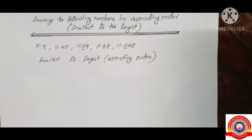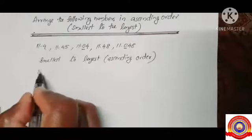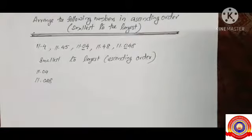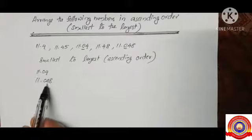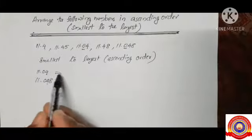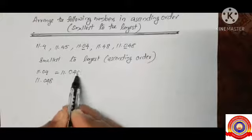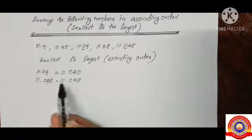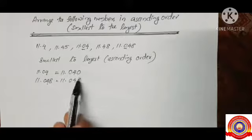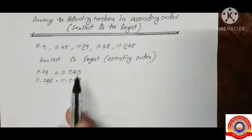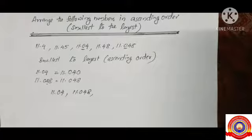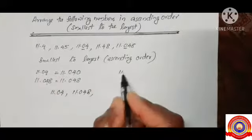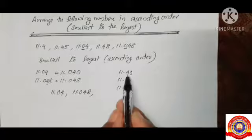Consider 11.04 and 11.048 — which number is the smallest? The tenths place is zero for both, the hundredths place is four for both, then the thousandths place: the first number has 0 and the second number has 8. So the smallest one is 11.040, and the next number is 11.048. The remaining numbers are 11.40, 11.45, and 11.48.